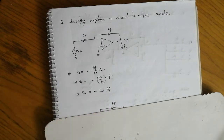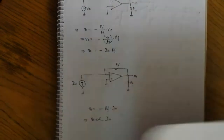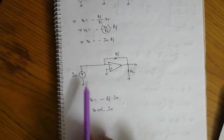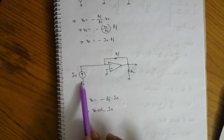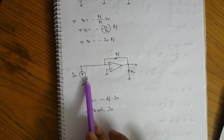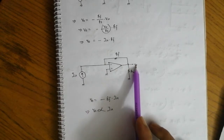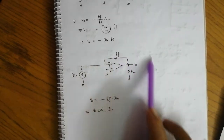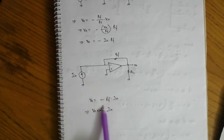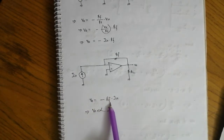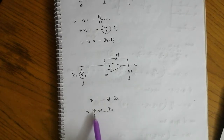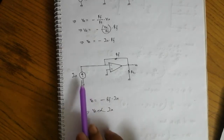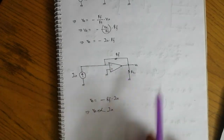Now we look at the current-to-voltage converter. The equation is V0 equals minus Rf multiplied by I_in. Here Rf is the feedback resistance, and I_in is the input current to the inverting amplifier. The output voltage is proportional to I_in — the input current signal is converted to a voltage signal.